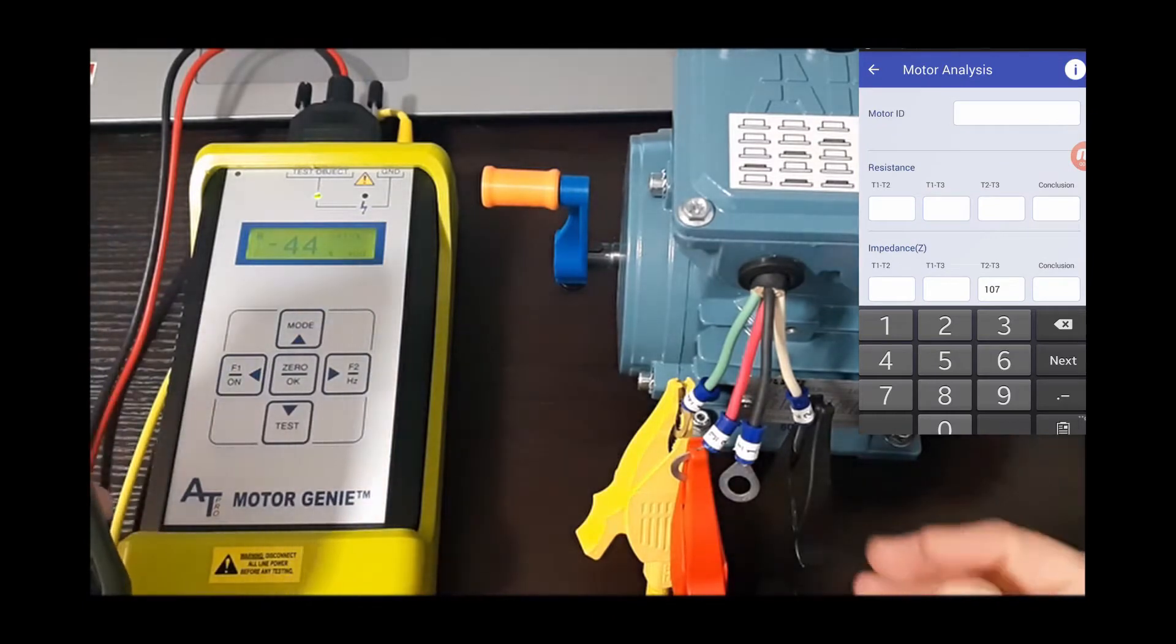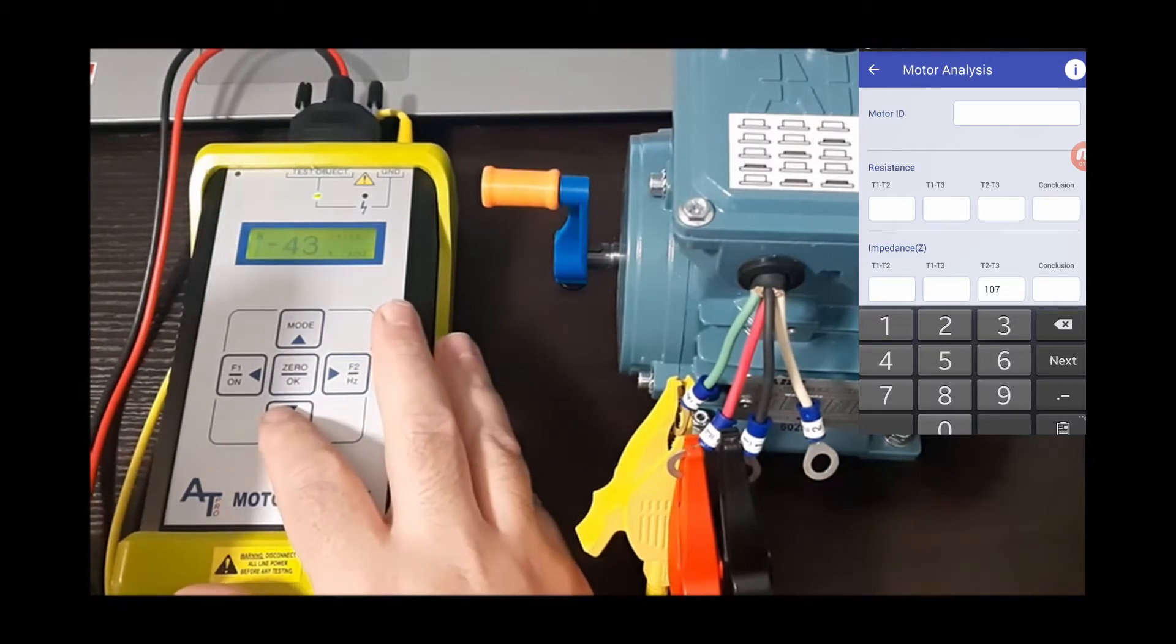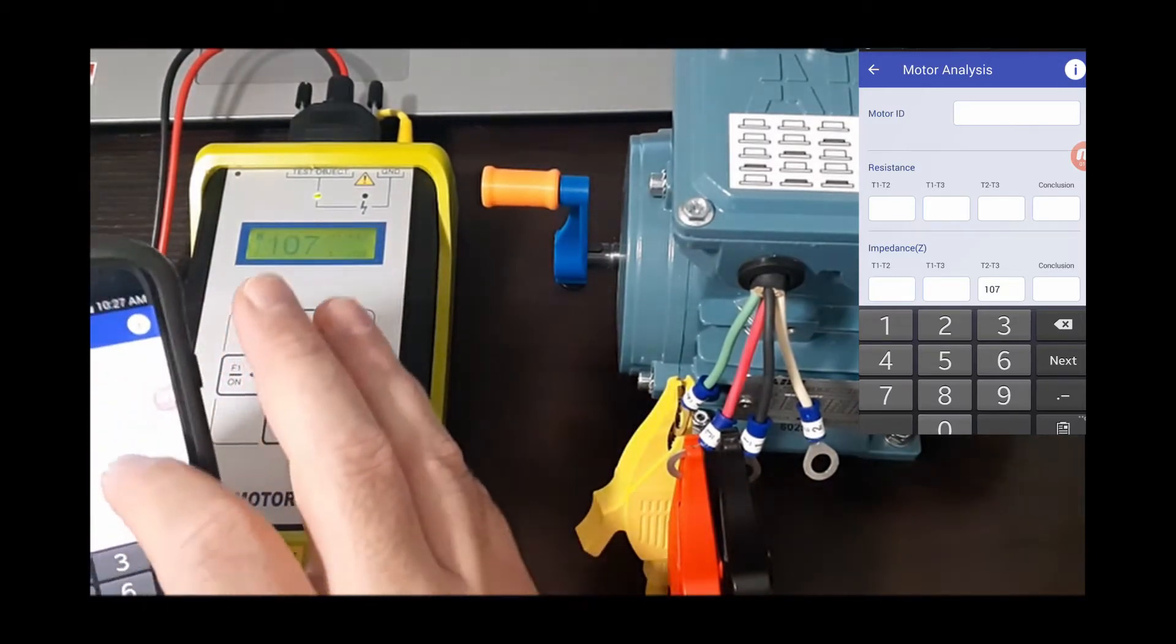So we switch over 1-3. So minus 43 was our IF there.